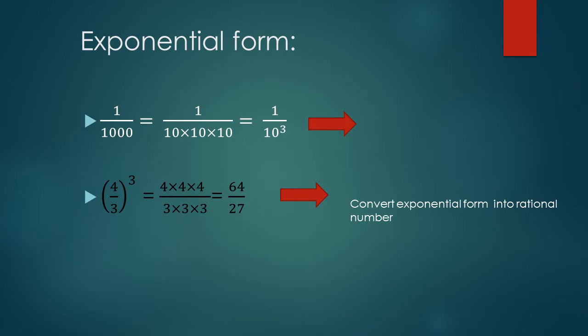Second one is 4 upon 3 to the power 3. And we are expanding, 4 into 4 into 4 upon 3 into 3 into 3. It becomes 64 upon 27. Convert exponential form into rational number. And in first one, we are converting a rational number into exponential form.